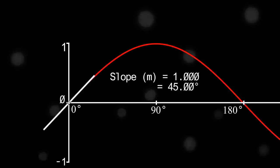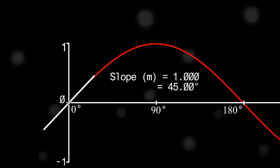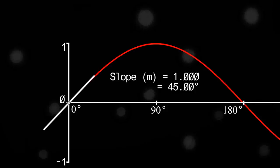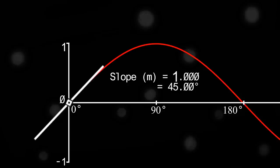No surprise there, because a perfectly horizontal blade means that the tip of the blade is one horizontal blade length from the center of the propeller, and zero vertical blade lengths from the same center. The magic happens when we examine the slope, or derivative, of the sine function at theta equals 0 degrees on the horizontal axis — it's 1, the same value as the output of the cosine function at theta equals 0.